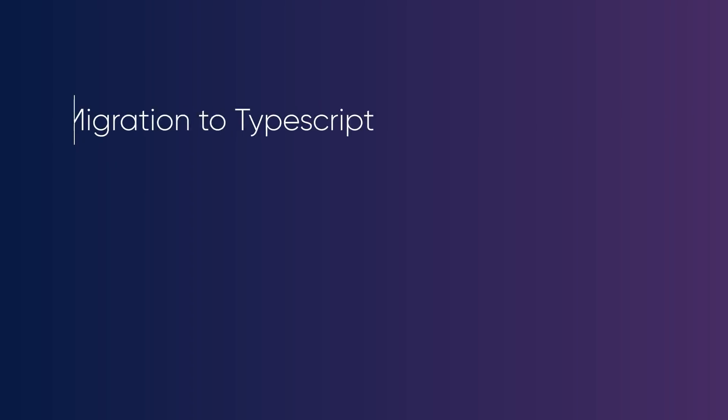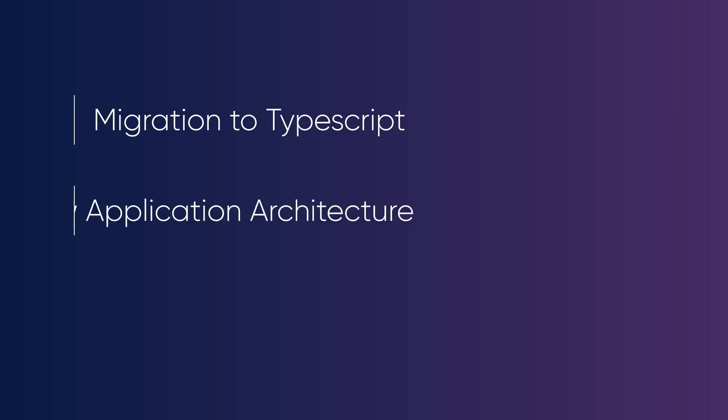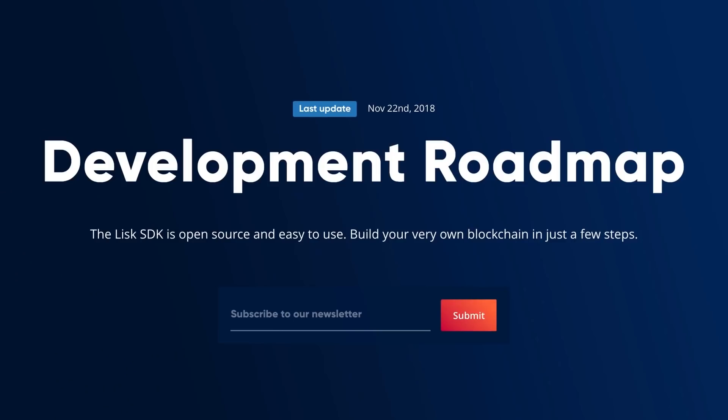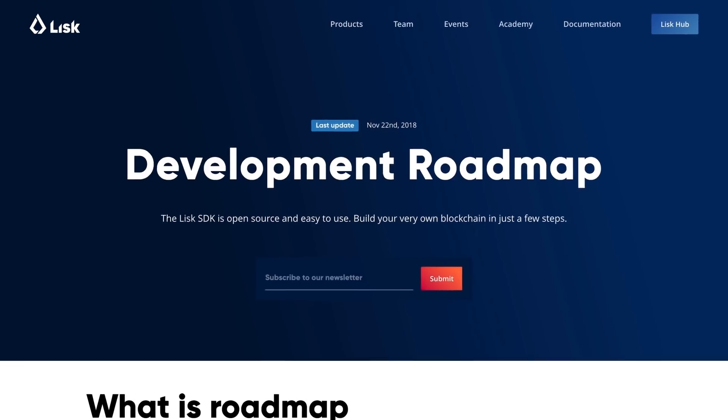The initial topics of focus — quality and performance, application architecture and design — are intended to provide the proper foundations for the future ecosystem of blockchain applications. The TypeScript migration, new application architecture, and design patterns introduced by our roadmap are all aspects we are very excited about. Prioritizing the SDK over sidechains means we can start fostering the blockchain application ecosystem while we implement sidechain interoperability.